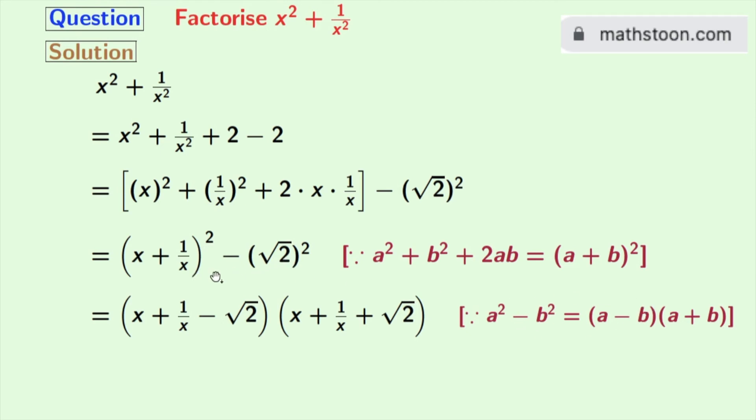Doing so we get x plus 1 by x minus root over 2 times x plus 1 by x plus root over 2. So finally we get x-square plus 1 by x-square as the product of these two expressions. And this is our desired factorization.